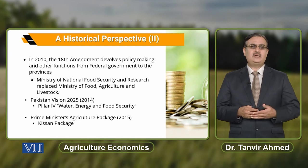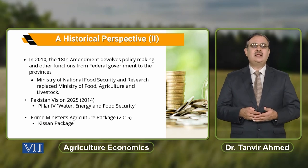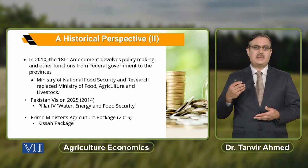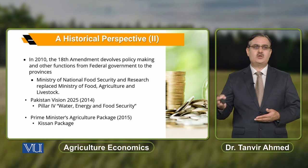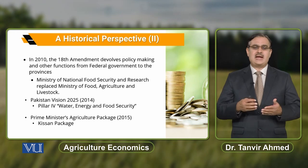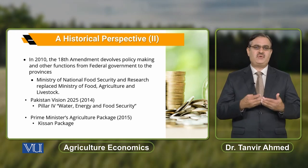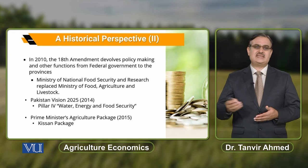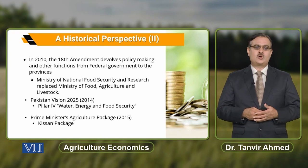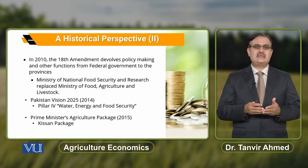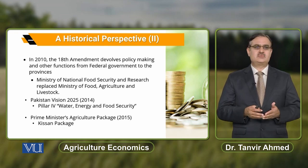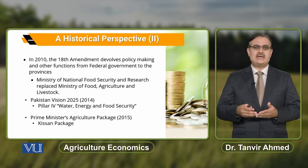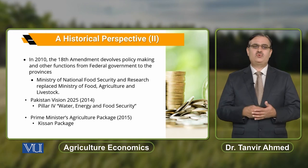In 2010, the 18th Amendment devolved policy-making and other functions from the federal government to the provinces. The Ministry of National Food Security and Research replaced the Ministry of Food, Agriculture and Livestock.